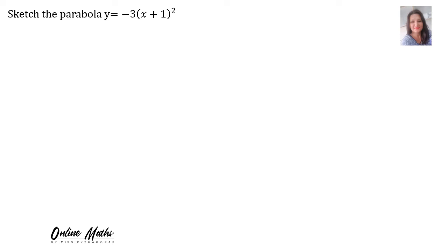Again we will use the five point plan. Number one, the shape. A's value is negative, therefore it's a sad faced parabola.